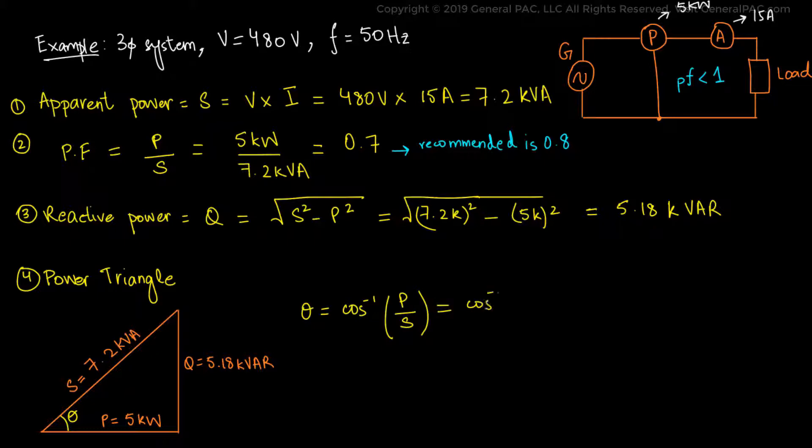The phase angle is the cosine inverse of the ratio between the real power and apparent power. The angle comes out to be approximately 46 degrees, and our objective is to connect a capacitor in parallel with the inductive load to reduce the phase angle.